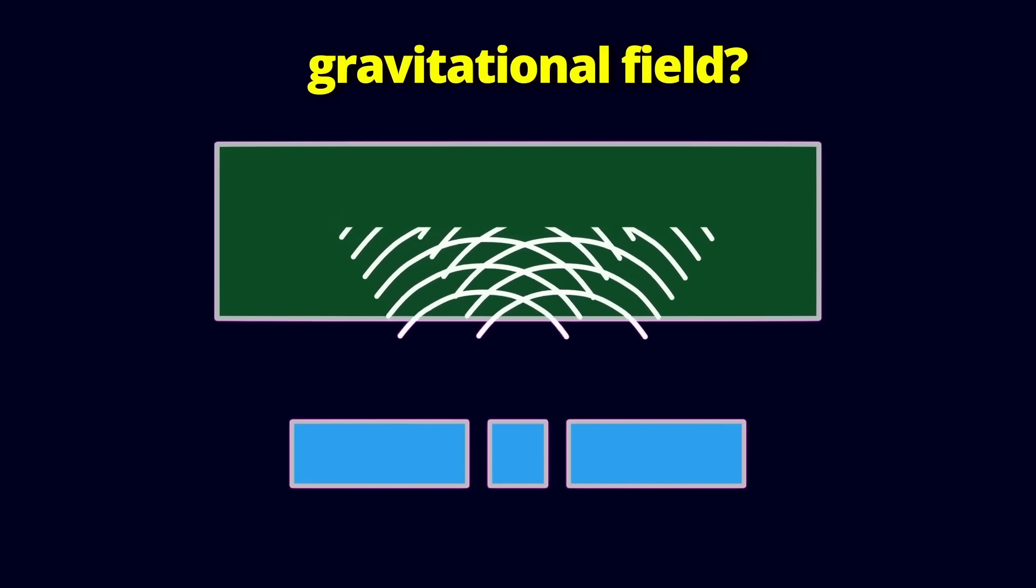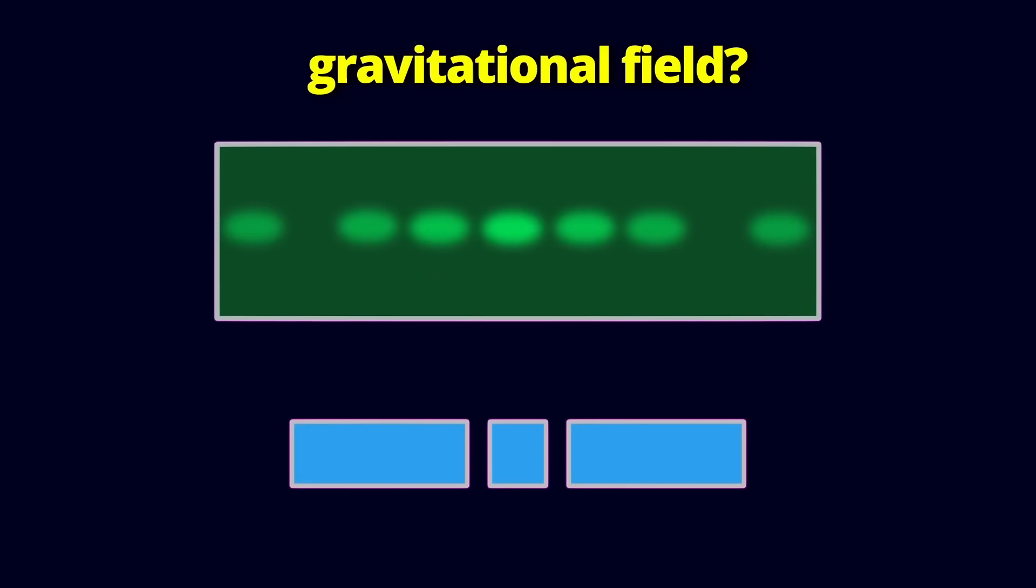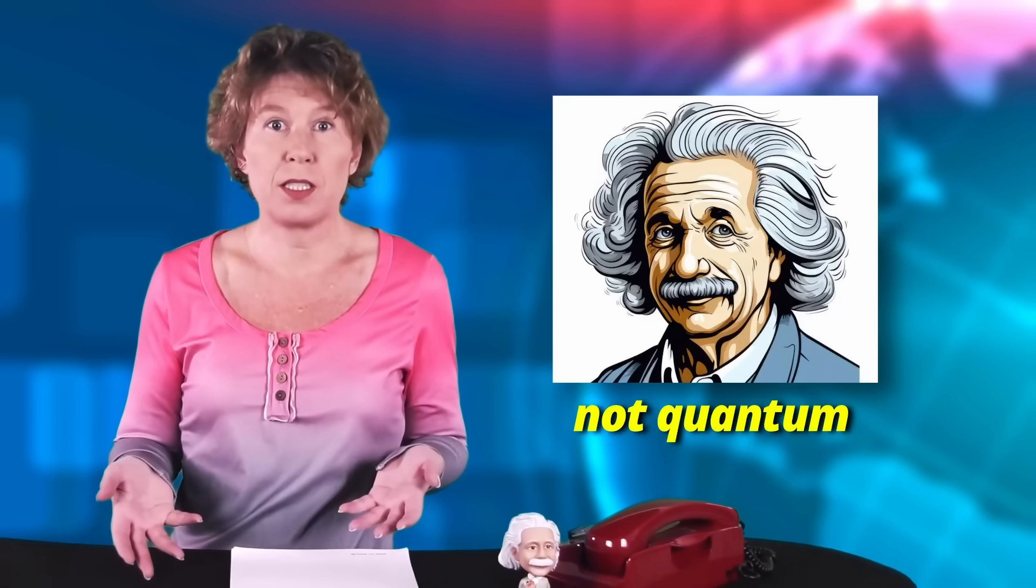You see, the issue is that Einstein's theory of general relativity doesn't have quantum properties. So if we take a particle and do an experiment that tests its quantum properties, like the famous double-slit experiment, then we don't know what happens with its gravitational field. The quantum particle goes both ways at once, so you'd think the gravitational field of the particle also goes both ways. But that can't be, because Einstein's theory doesn't have quantum properties.